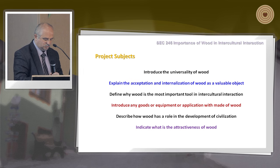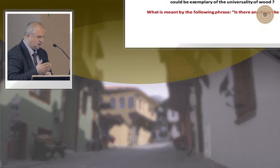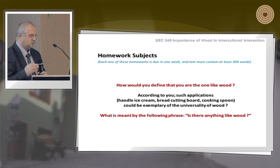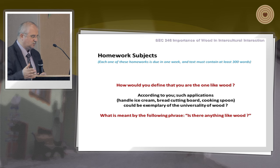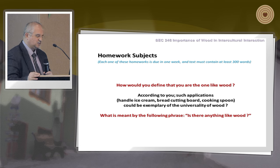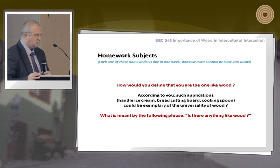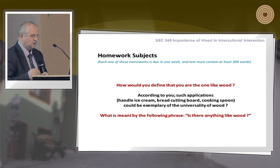The project is assigned as group work. There is also individual homework. Students are given topics and asked to write at least 300 words. For example: how would you define yourself as someone who loves wood? Topics also include everyday wooden objects such as an ice cream stick, bread cutting board, or cooking spoon as examples of the universality of wood, and the question 'Is there anything like wood?'